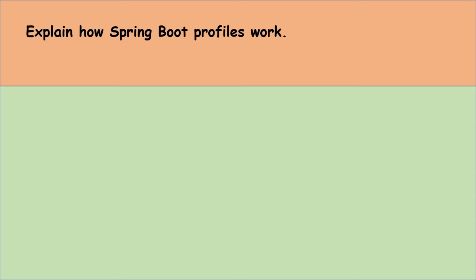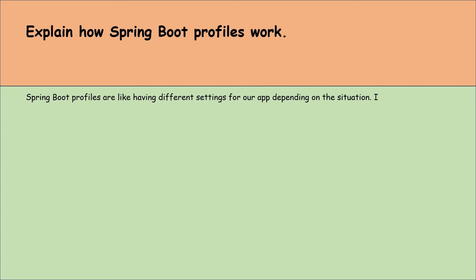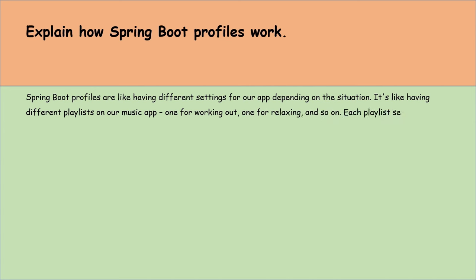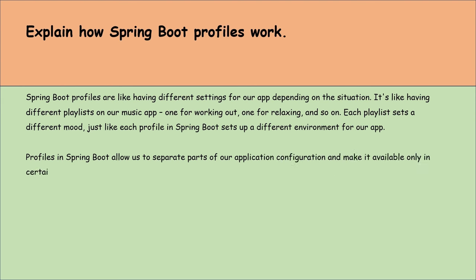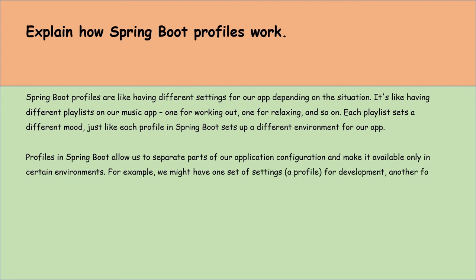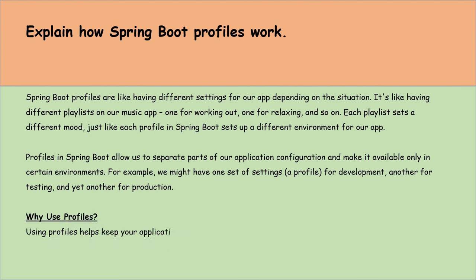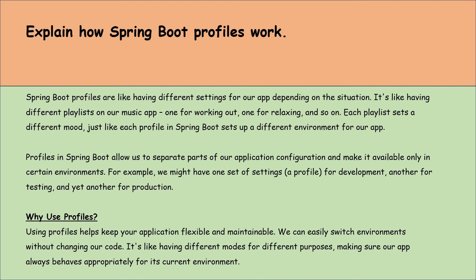Explain how Spring Boot profiles work. Spring Boot profiles are like having different settings for our application depending on the situation — like having different playlists on a music app, one for working out, one for relaxing. Each profile in Spring Boot sets up a different environment for our application. Profiles allow us to separate parts of our application configurations and make them available only in certain environments. For example, we might have one set of settings for development, another for testing, and yet another for production. Using profiles helps keep our application flexible and maintainable — we can easily switch environments without changing our code.